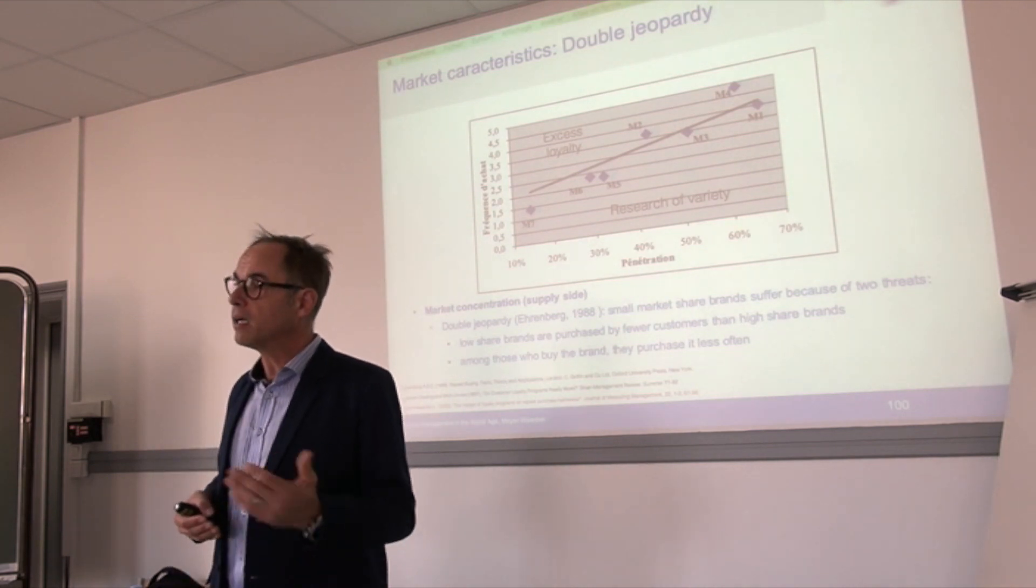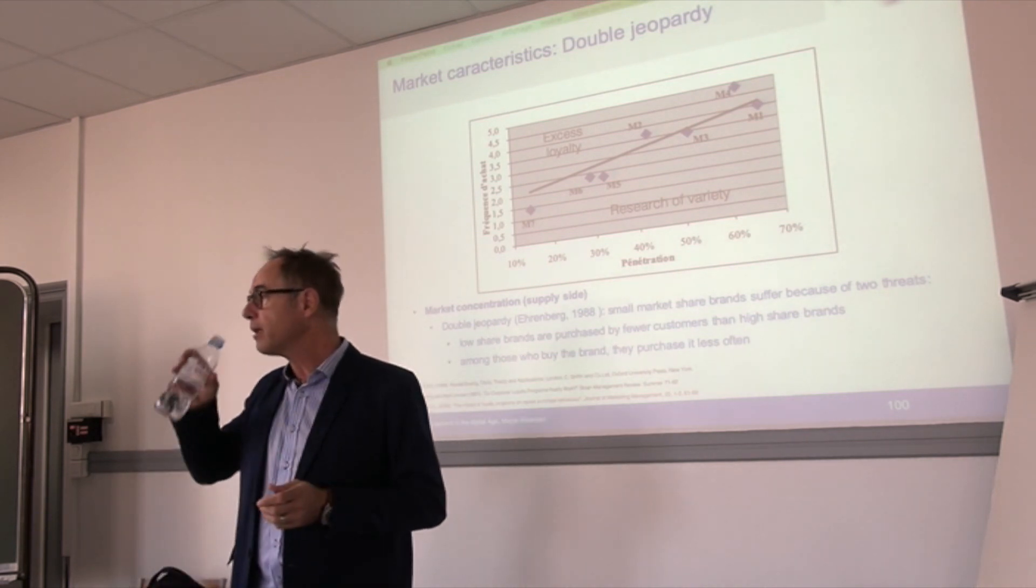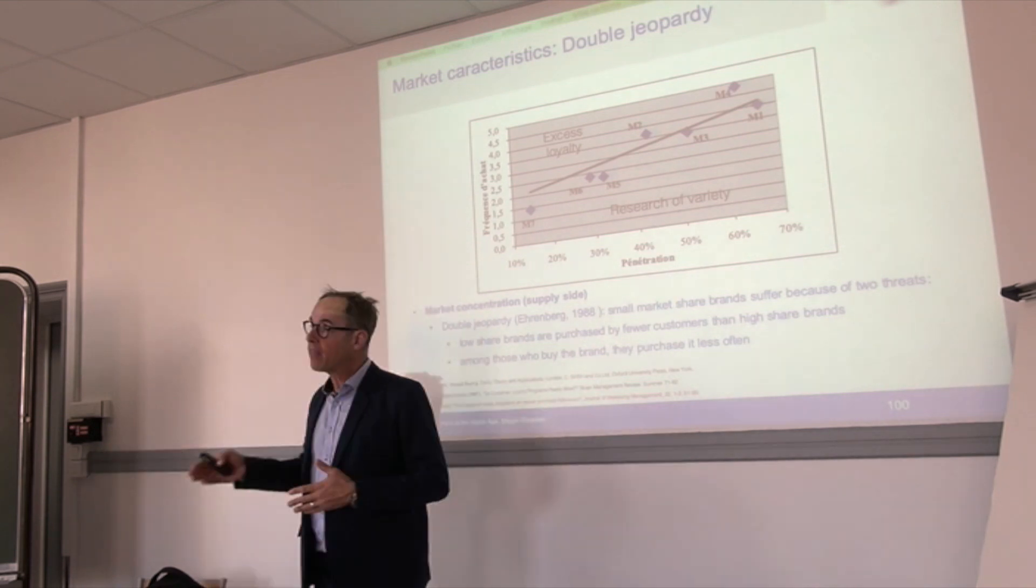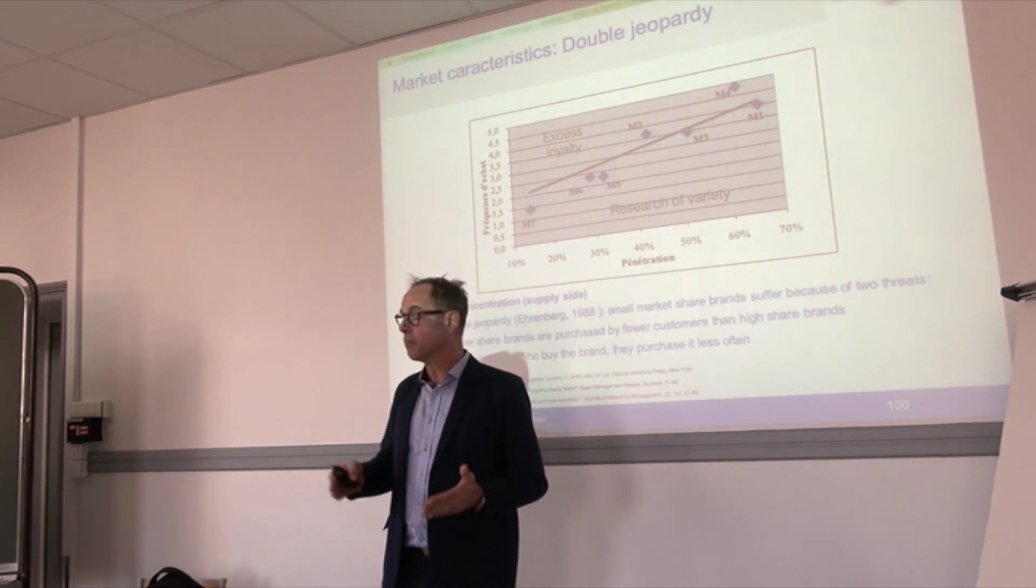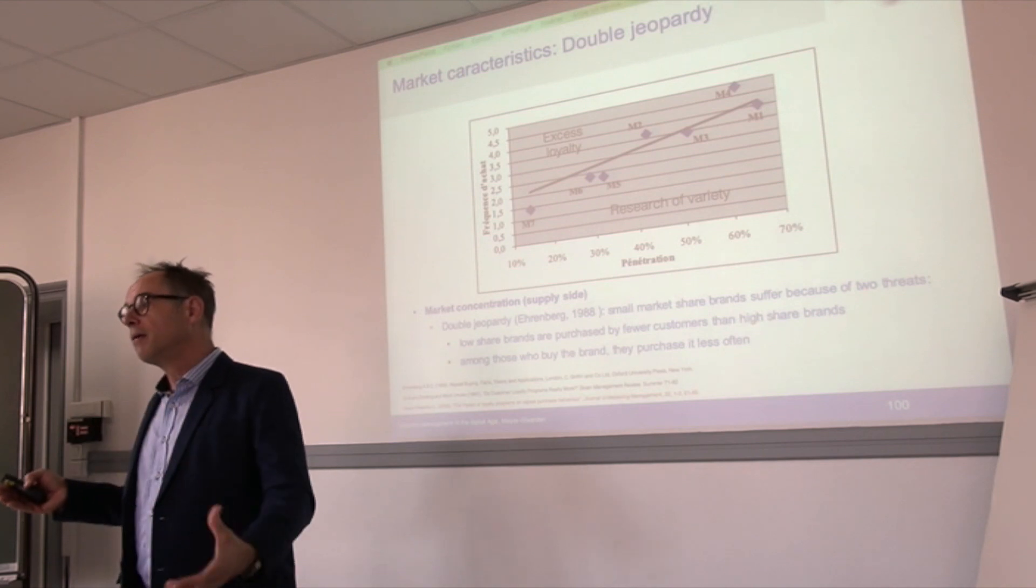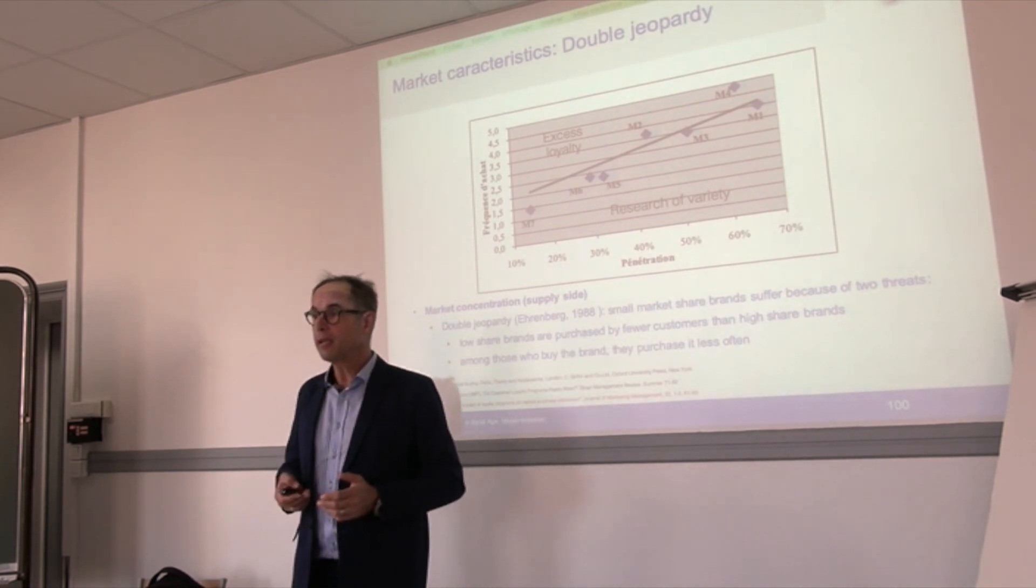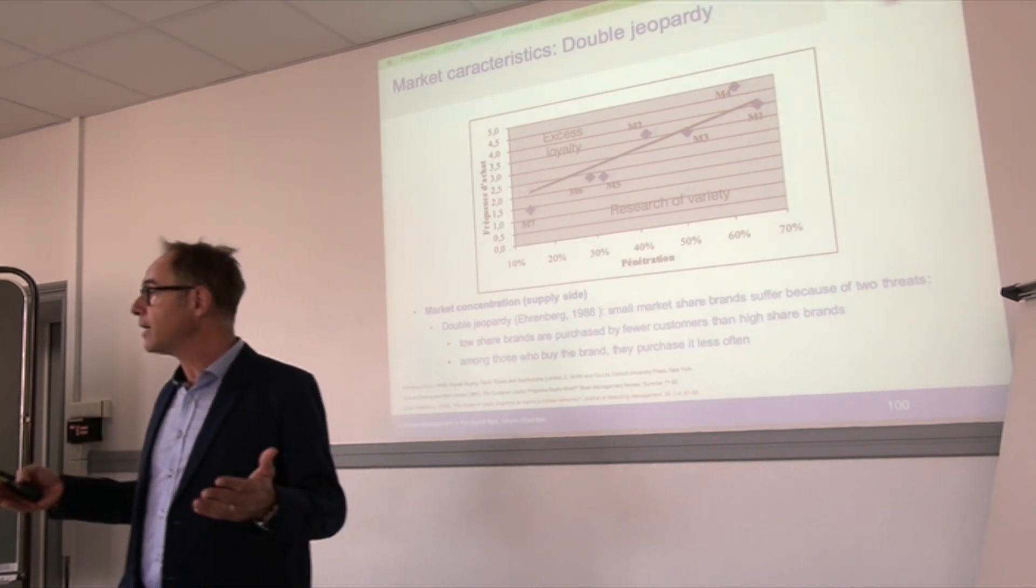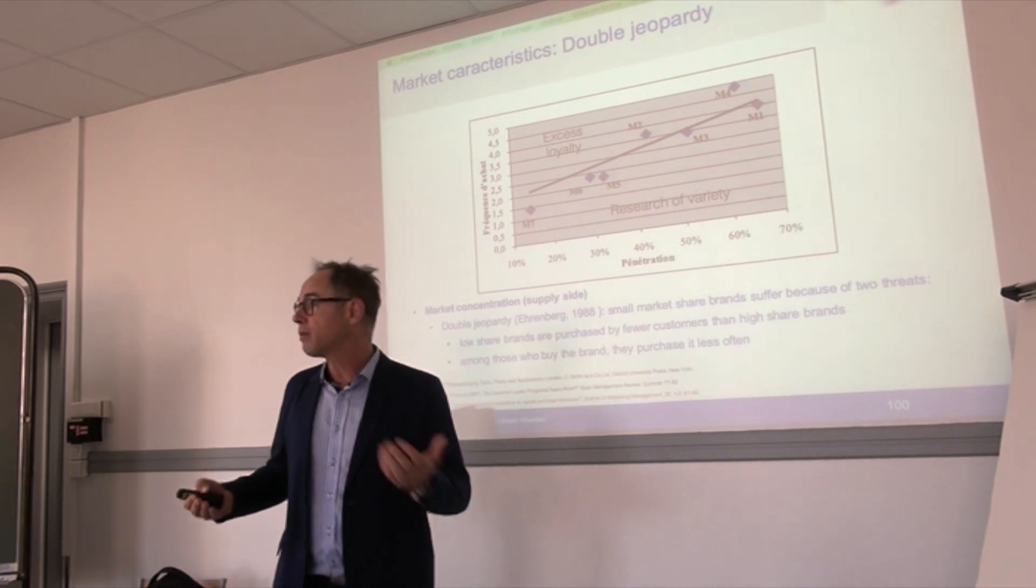If we look at television channels, we have leader channels like TF1, the leading channel, or France 2, France 3. TF1 has probably more penetration. On the other hand, we have channels like Direct Energy, the music channel, which has less buyers or less people who look at this channel. If you look at the frequency of viewing, how many times people look at TF1 versus Direct Energy, we would probably find a lower viewing frequency for Direct Energy. So we would again find double jeopardy - smaller channels not only have less people who look at them, they look less frequently.